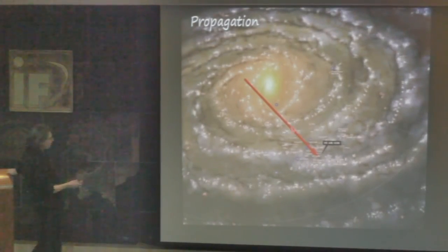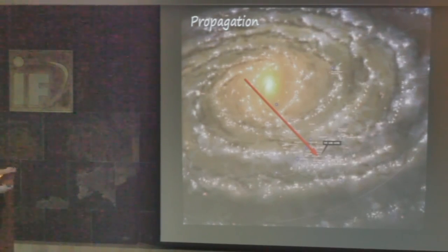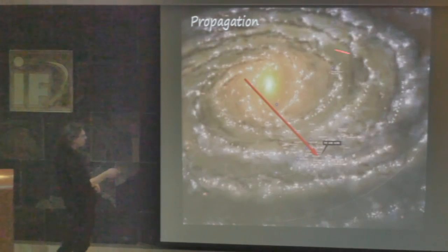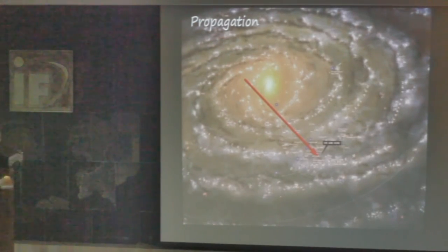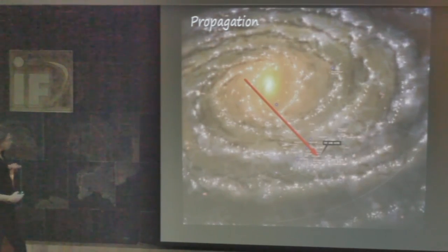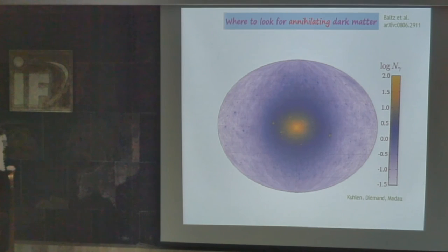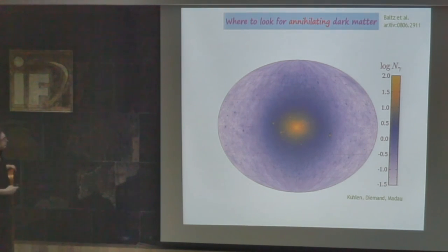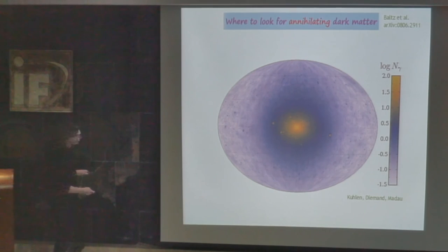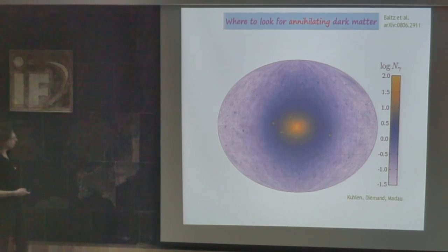The fact that gamma rays propagate in straight lines is a great opportunity for detection, because you can identify different potential targets. This is quite different to dark matter annihilations into electrons and positrons: due to diffusion, you get a flux of electrons and positrons which is roughly isotropic, losing all directional information. A simulated map of the galaxy — assuming perfect subtraction of galactic foregrounds — shows only the dark matter annihilation signal. The brightest points are the most promising targets for detection, and these are the most interesting for searches for dark matter annihilations.